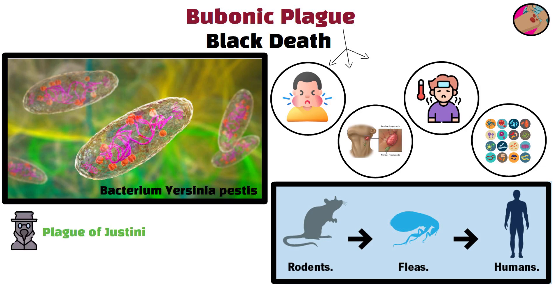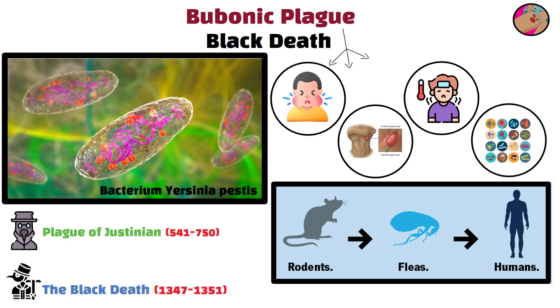The Plague of Justinian, 541 to 750, and the Black Death, 1347 to 1351, were two of the most devastating pandemics in history, killing millions across Europe, Asia, and Africa.